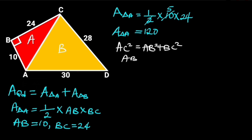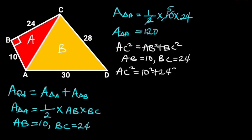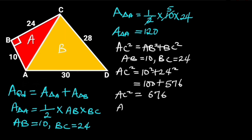AB is equal to 10 and BC is equal to 24. If we plug in these values in the equation, AC squared will be equal to 10 squared plus 24 squared. 10 squared is 100, and 24 squared is 576. 100 plus 576 is equal to 676. So AC squared is equal to 676. Taking the square root of both sides will give us AC is equal to 26.